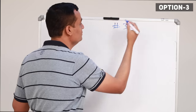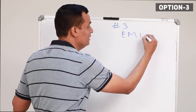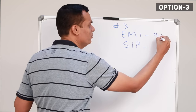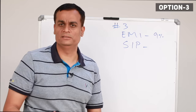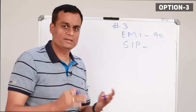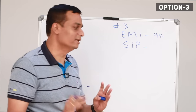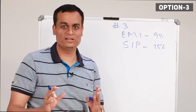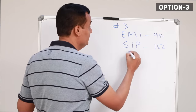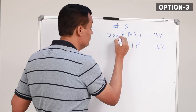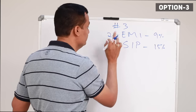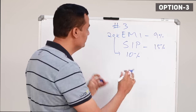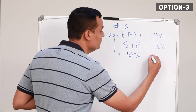We are going to look at the third method. We are going to look at the EMI and also consider a SIP — a pure equity investment. We are going to look at investing in the 15th month through a fund. The EMI amount is $20,000. This 10% of the EMI comes to $2,500, and that amount goes into the SIP.